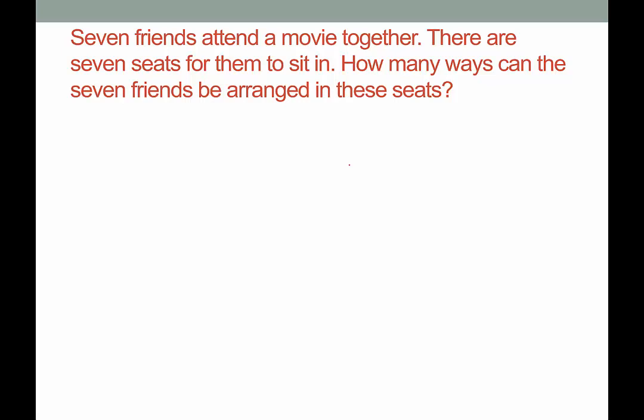Another application of factorials. Seven friends attend a movie together. There are seven seats for them to sit in. How many ways can the seven friends be arranged in these seats?